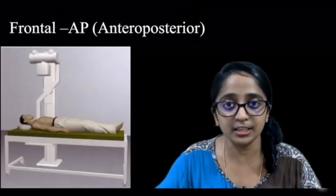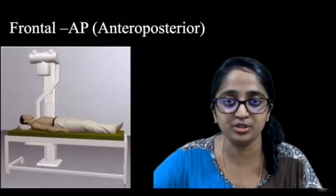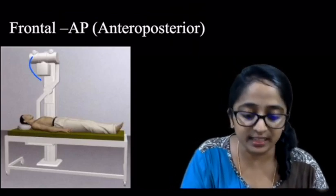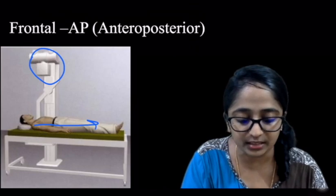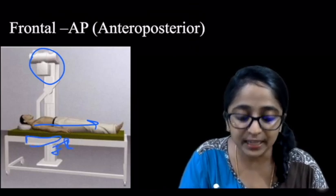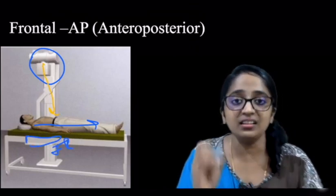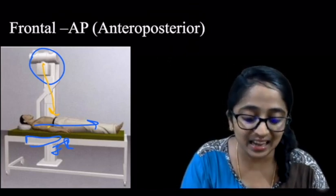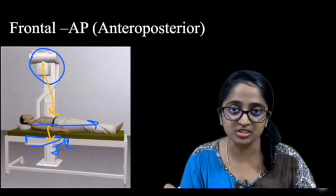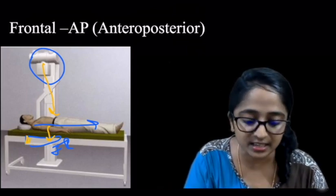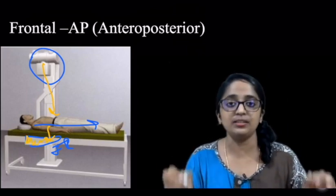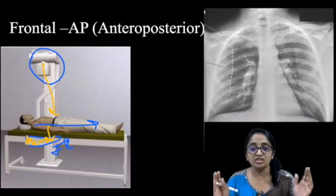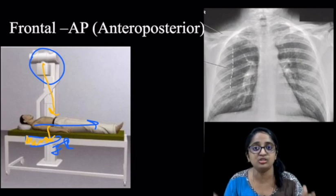Coming to the second subtype of frontal projection, known as AP or anterior-posterior projection. Here again, you have the x-ray tube, the patient, and the image receptor. The beam from the x-ray tube first encounters the anterior aspect of the patient's chest and exits via the posterior aspect to hit against the image receptor kept touching the posterior aspect of the patient's chest. This is how the chest radiograph in AP projection looks like.